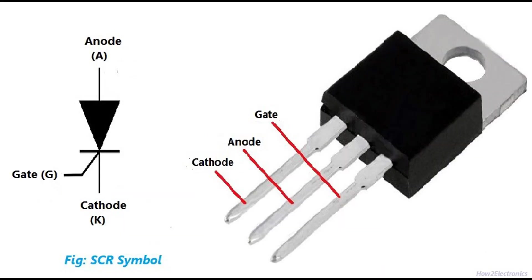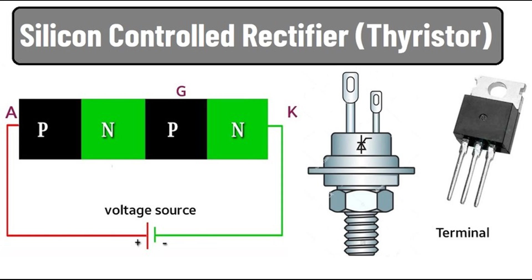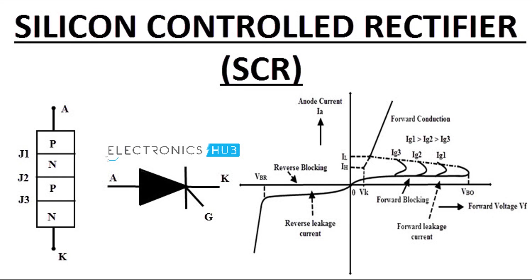The operation of an SCR can be understood by examining its behavior in different modes: forward blocking, forward conducting, and reverse blocking. Forward blocking mode — Condition: positive voltage is applied to the anode relative to the cathode, but no gate current is applied. Behavior: junctions J1 and J3 are forward biased, but junction J2 is reverse biased, preventing current flow through the SCR. The SCR remains in the off state, blocking the current.